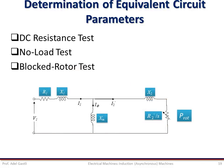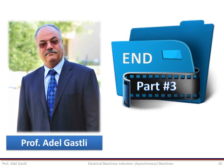So the DC resistance test, the no-load test, and the blocked rotor test have allowed us to determine all equivalent circuit parameters in addition to rotational loss. This equivalent circuit will allow us to calculate all performances and characteristics of the induction machine, which we will study in the next parts of this chapter. This is the end of this part.